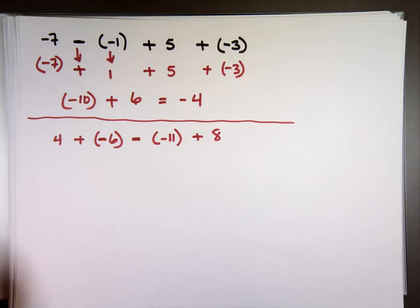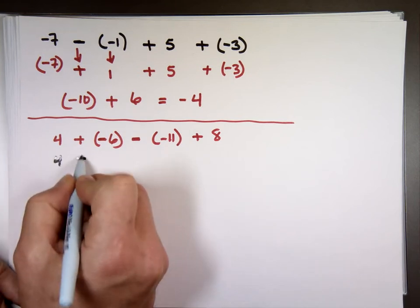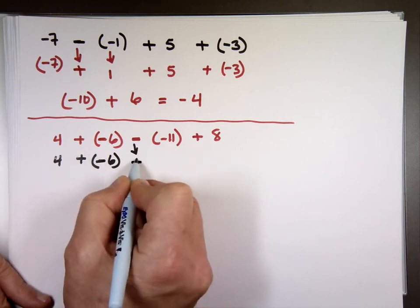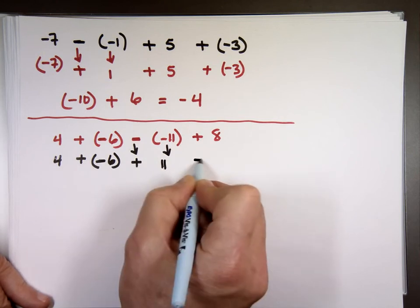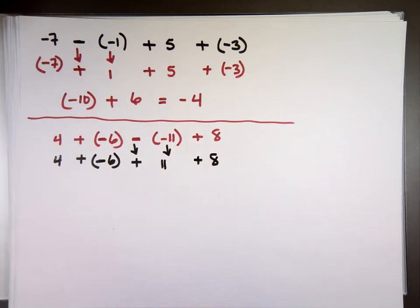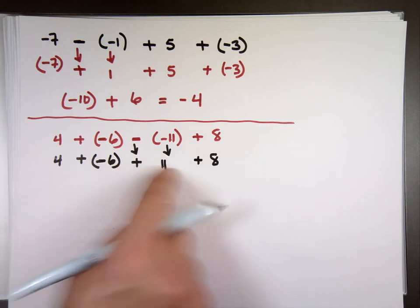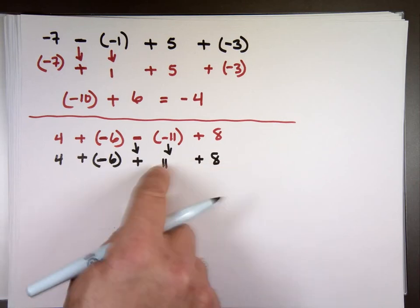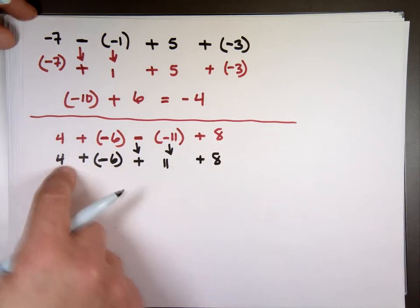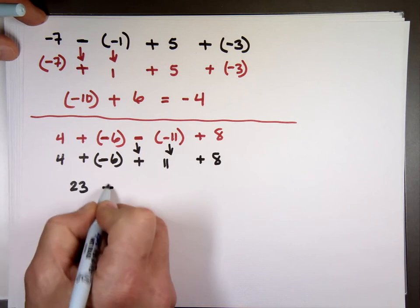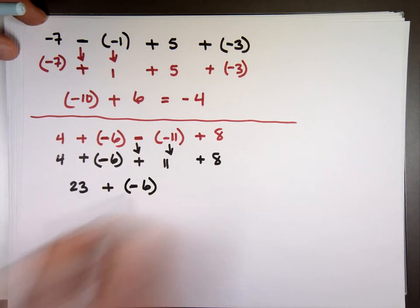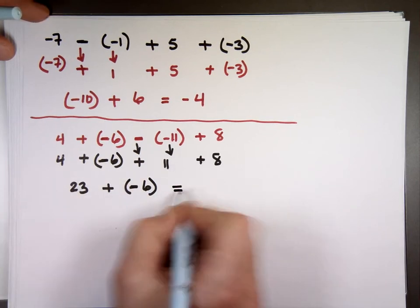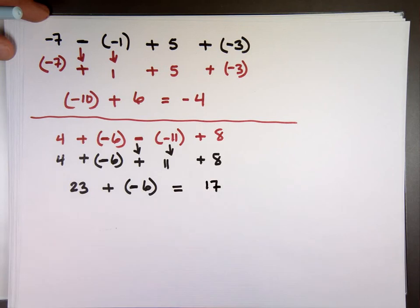Again, look for the subtraction — change it to addition. That's still addition, so there's no change there. Here are the subtractions — make them addition and take the opposite of that number. Take the three positive numbers and make them one number: 23. There's only one negative number. Subtract 6 from 23 — and what's the sign? Positive, because it's the larger number.